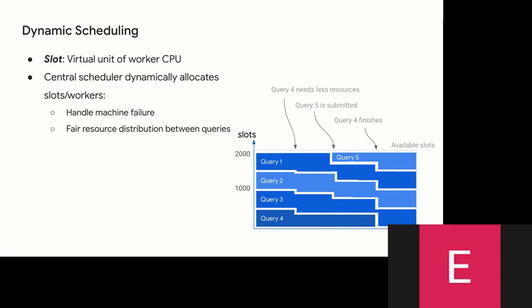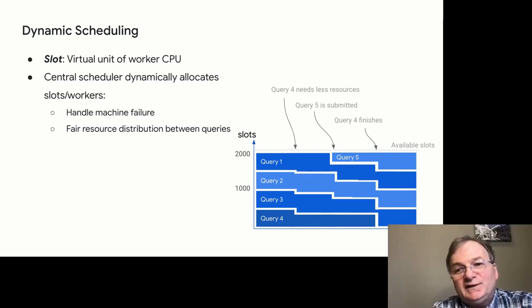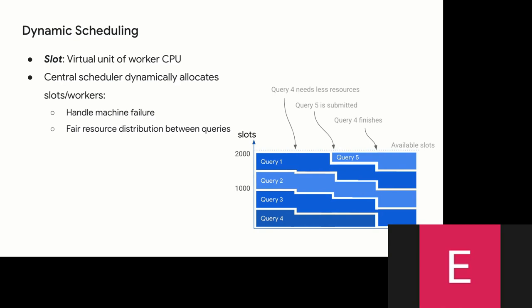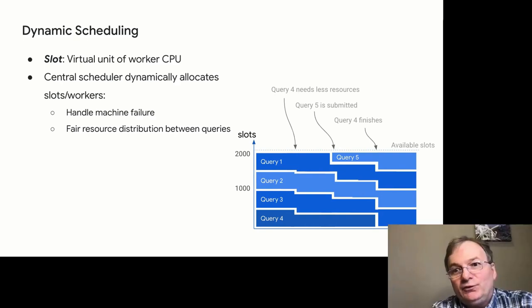A participant asks: are there parameters for handling shuffle partitions, or does BigQuery handle that behind the scenes? In distributed systems, data skew or broadcast decisions often require manual tuning. Does BigQuery do that intelligently by looking at the data? Alex responds: yes, we actually have many slides discussing exactly how we partition data, so we'll go into those details.